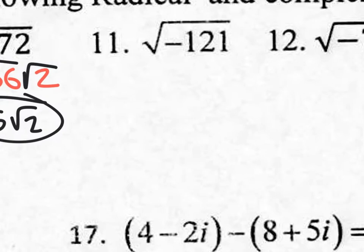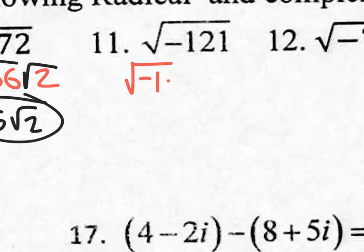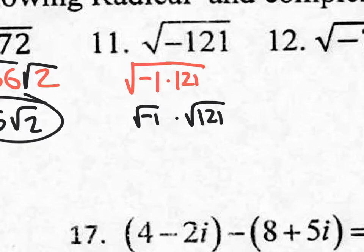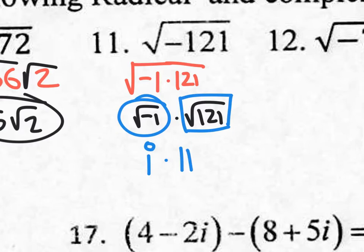Wait a minute — there's a negative in there. What does that mean? Imaginary, right? All you got to do is put an i on the outside. If you wanted to show your work, you have a negative 1 times 121 — that's the same thing as the square root of negative 121. You're going to split the root: the square root of negative 1 times the square root of 121. The square root of negative 1 is i, and the square root of 121 gives you 11. So you have i times 11, which means your final answer is 11i.